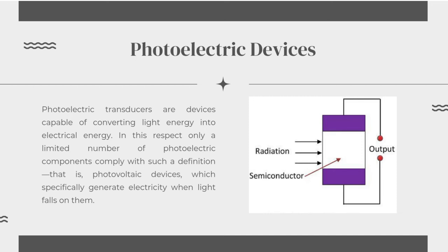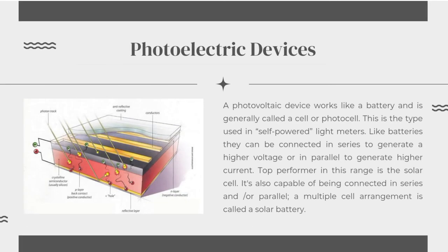Photoelectric devices. Photoelectric transducers are devices capable of converting light energy into electrical energy. Only a limited number of photoelectric components comply with such a definition — that is, photovoltaic devices, which specifically generate electricity when light falls on them. A photovoltaic device works like a battery and is generally called a cell or photocell, used in self-powered light meters. They can be connected in series to generate higher voltage, or in parallel to generate higher current. The top performer in this range is the solar cell. A multiple cell arrangement is called a solar battery.